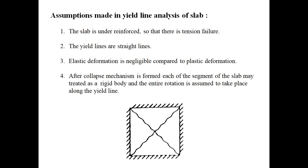These are the assumptions made in yield line analysis of slabs. First, the slab is under-reinforced so that there is tension failure. Second, yield lines are straight lines. In this image showing a simply supported square slab, the yield lines are always straight lines, starting at one edge and ending at the corner edge.